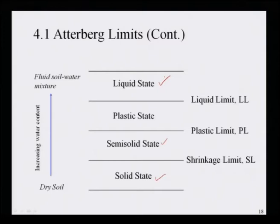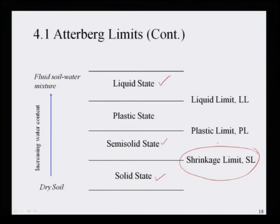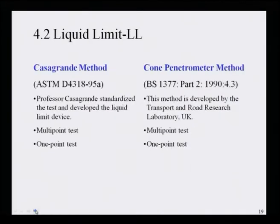These four boundary conditions are called Atterberg limits. The shrinkage limit identifies the dry state, the plastic limit is the borderline between plastic and semi-solid states, and the liquid limit distinguishes the liquid state from the plastic state. Let us now look at each limit one by one, starting with the liquid limit.